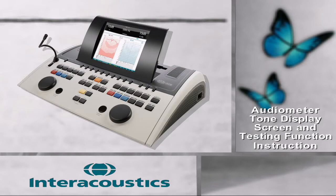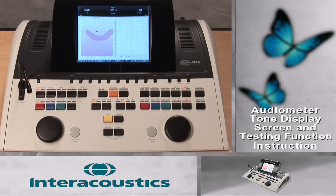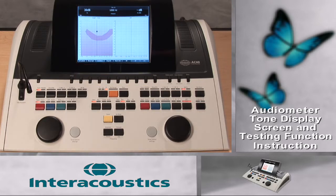The Tone screen provides visualization of the audiometer settings and testing results while conducting pure tone audiometry. This video series will explain the use of the function keys that line the bottom of the screen. The audiometer keyboard button overview can be viewed in a separate video series.